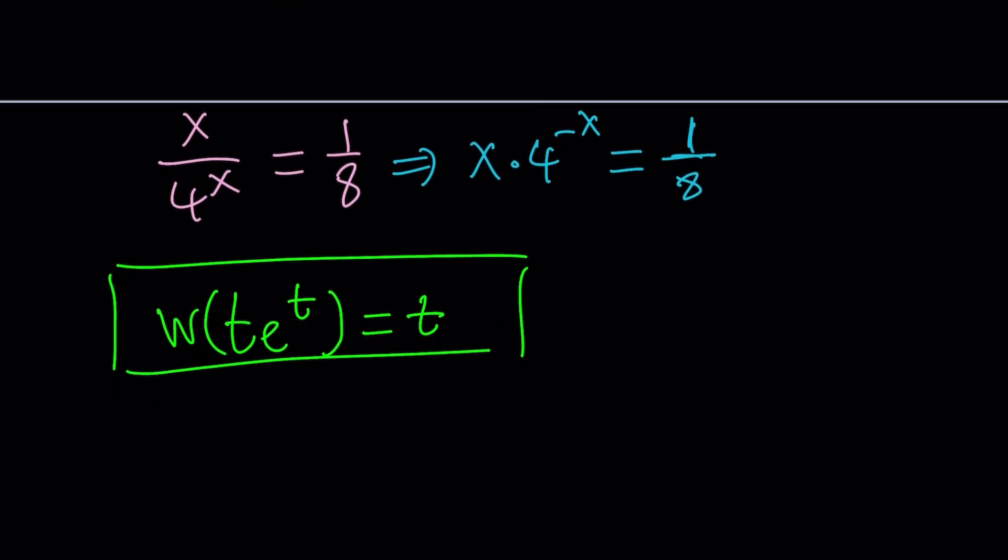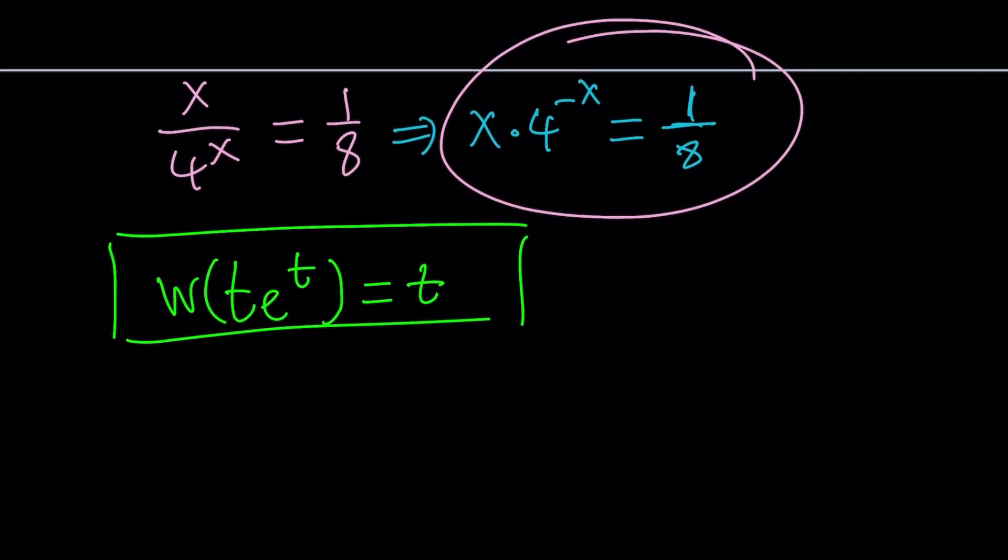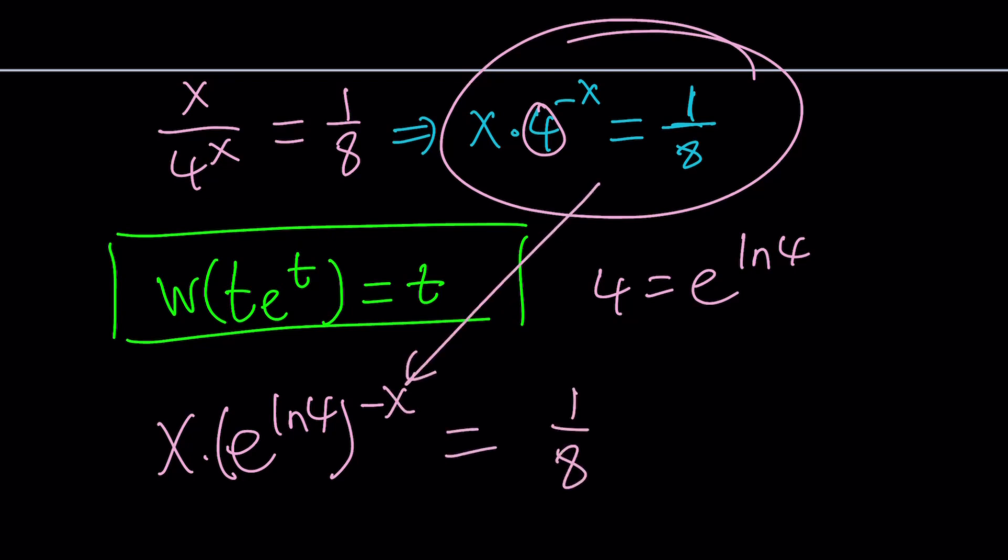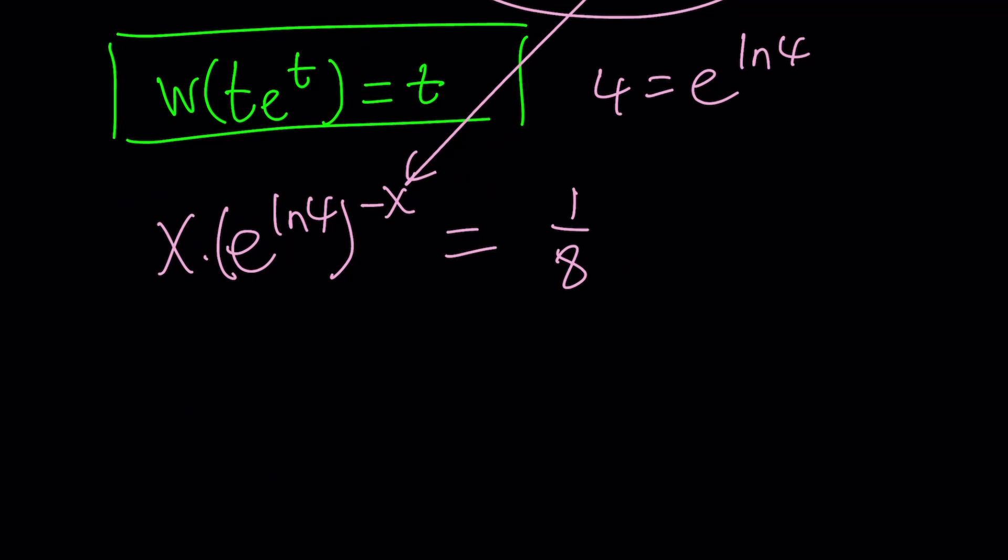So now we need to work with this expression and I want to have an e at the base, not 4. So let's go ahead and use the famous identity, 4 equals e^(ln4). If you go ahead and replace 4 with that, we get x times e^(ln4) to the power negative x from here equals 1/8. And then ln4 and negative x are both exponents so they will be multiplied. So this is going to give us x times e^(-x*ln4) equals 1/8.